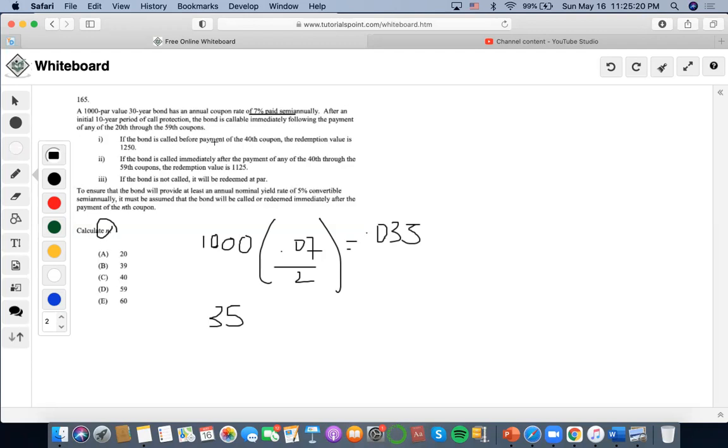We want to find out if this bond being called at a redemption of $1,250, what this new coupon rate is. We found the coupon rate of $35, so we do $35 over $1,250 to find the percentage. We're going to do $35 divided by $1,250, and we get 0.028, which is 2.8%. Now let's compare this to the yield rate. The yield rate is 5% convertible semiannually. 5 divided by 2, that is 2.5% as the yield rate.